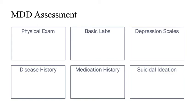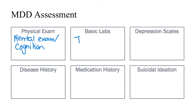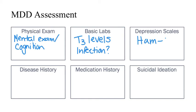Patient assessment in major depressive disorder includes additional tests to rule out other conditions and medications that could cause depression. A physical exam and mental status exam should be conducted to determine the level of cognitive functioning, along with a basic lab workup — primarily thyroid hormone levels to determine whether hypothyroidism might be underlying the depressive symptoms. Depression rating scales such as the Hamilton Depression Rating Scale (HAM-D) and the Patient Health Questionnaire-9 (PHQ-9) are probably the two most common tools used to determine the severity of depressive symptoms.